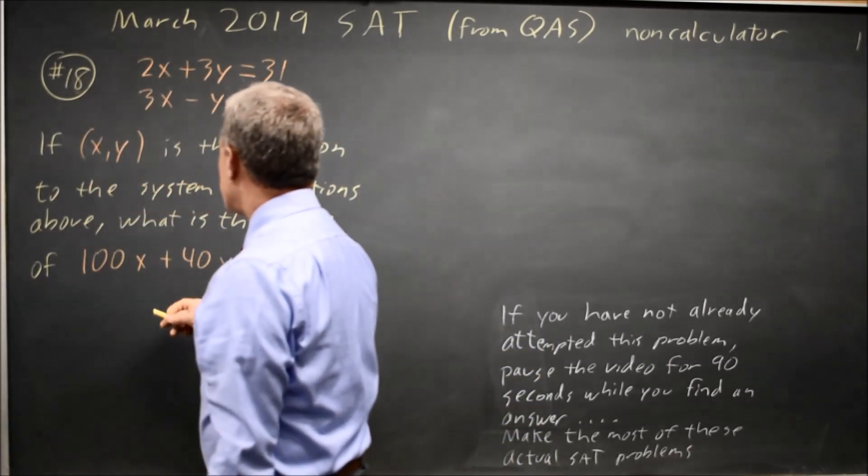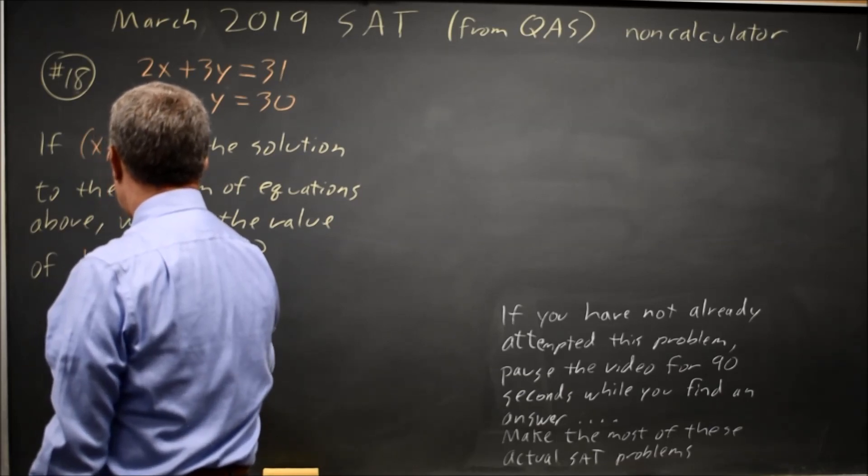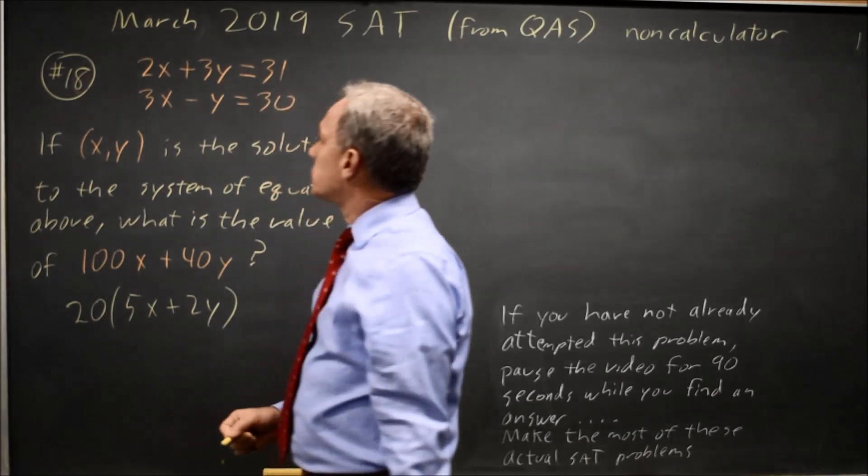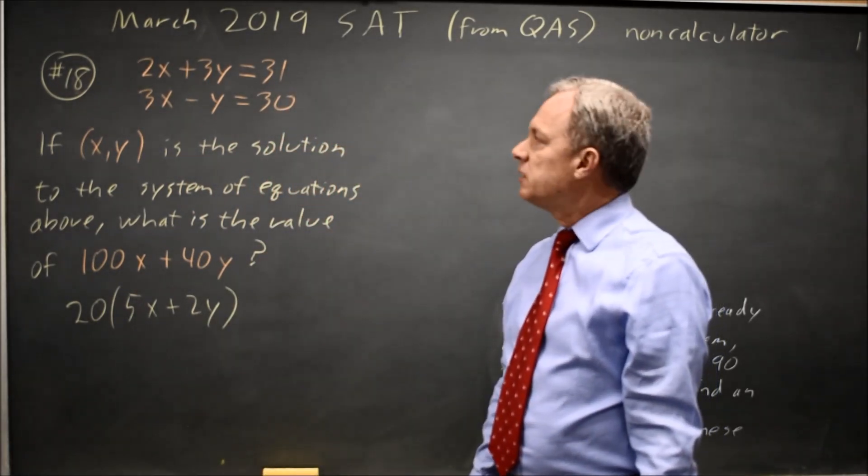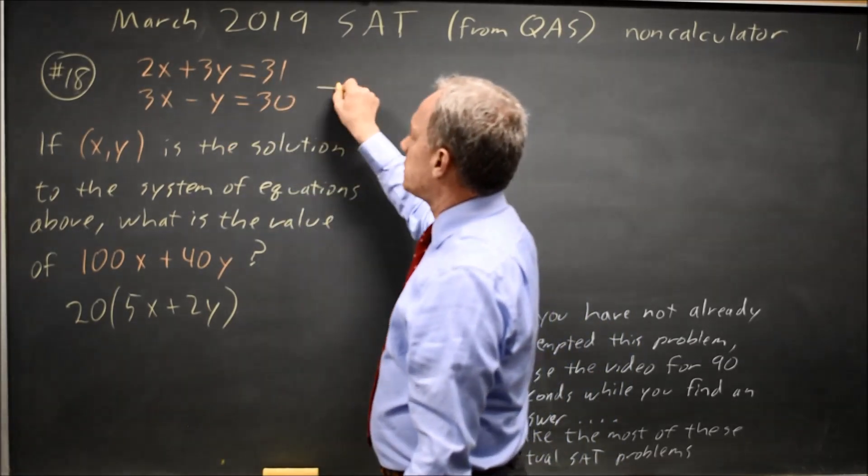I noticed that 100 and 40 are both multiples of 20. That's 20 times 5X plus 2Y. And the shortcut trick you often find is what they're asking for is a linear combination you obtain if you directly add these equations.